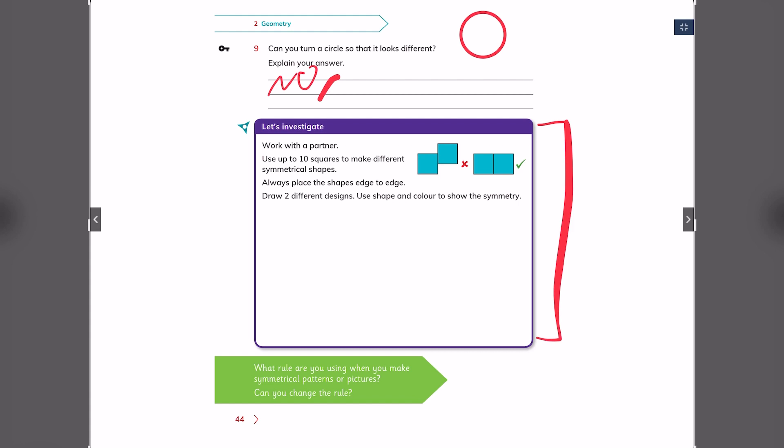This is an investigation section. Let's investigate. Work with a partner or on your own to find an answer for this one. Use up to 10 squares to make a different symmetrical shape. Always place the shapes edge to edge. Draw two different designs. Use the shape and color to show the symmetry. You can design anything that you like, like this, like this, like this. But all the edges must be together.